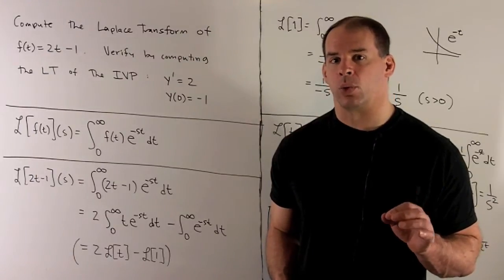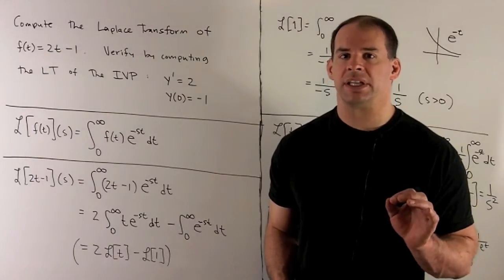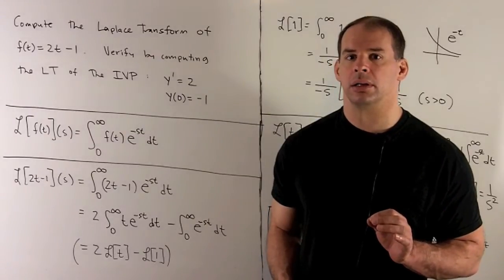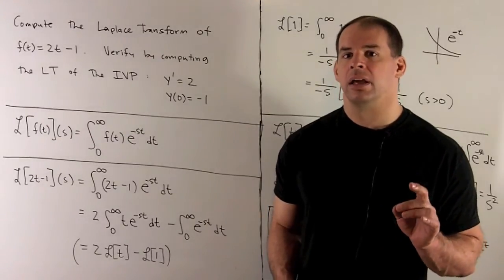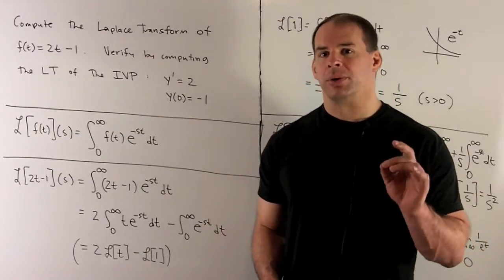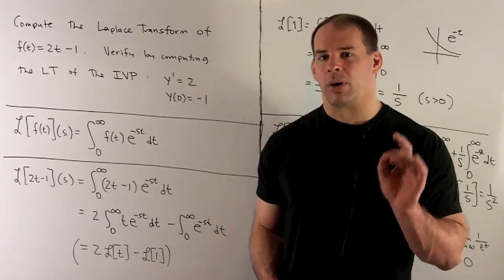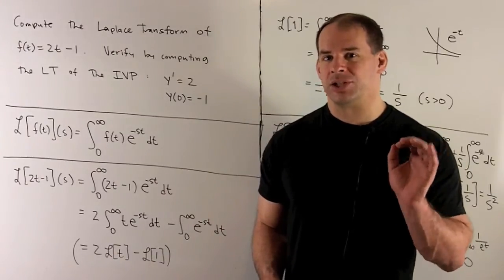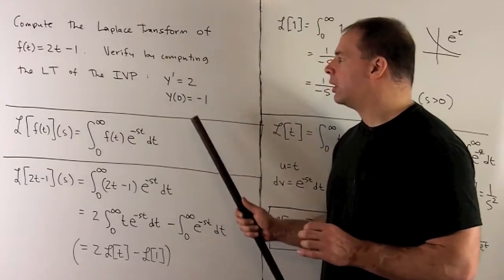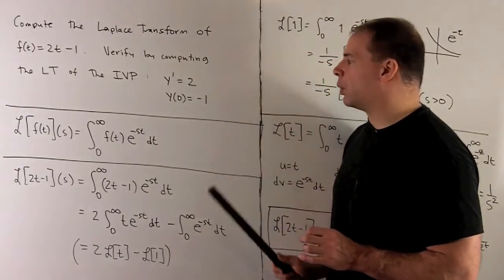Compute the Laplace transform of the function f of t equals 2t minus 1. Then verify your answer by computing the Laplace transform of y prime in the initial value problem y prime equals 2, y of 0 equals minus 1.